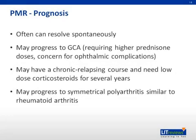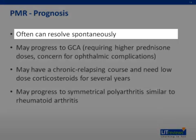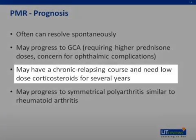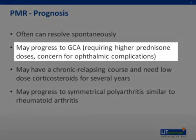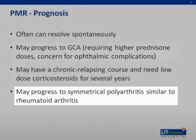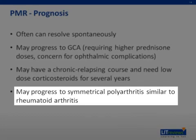The prognosis for PMR is generally quite good. With identification and appropriate treatment, most cases resolve completely. Some patients can even resolve spontaneously. Others may have a chronic relapsing course and may need repeat treatment or chronic low-dose steroids for many years. Some patients may develop the more serious giant cell arteritis, which may require higher prednisone dosages and have a risk for more severe complications. Still others may evolve into a symmetrical polyarthritis that appears like and is often treated similarly to rheumatoid arthritis.